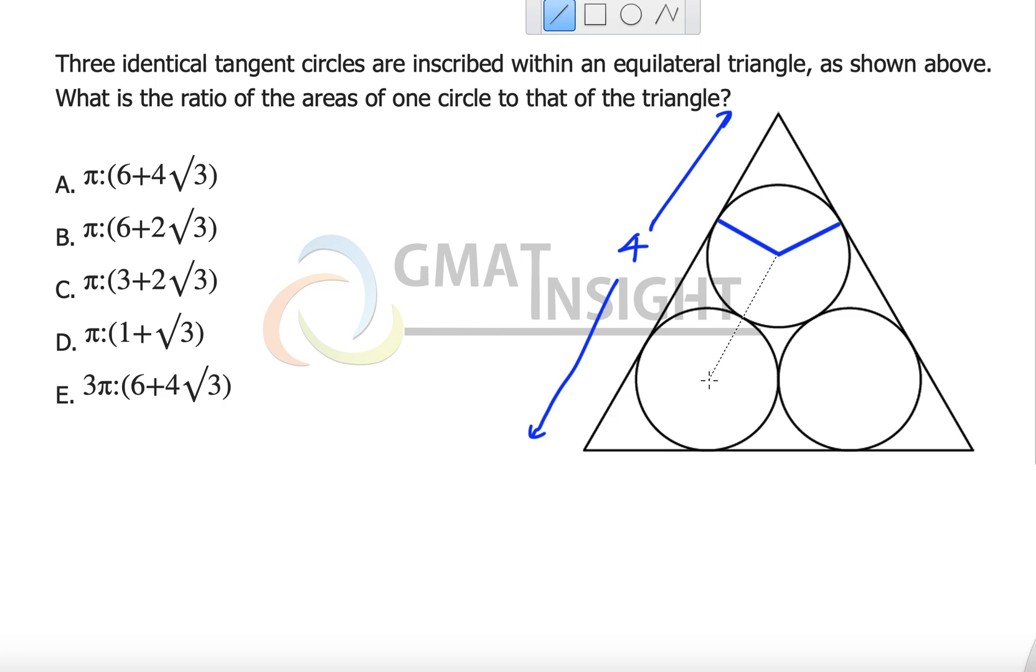We can also join their centers with each other and this also forms an equilateral triangle because here each side of this triangle has the length equal to twice the radius. This is radius, this is radius, this is radius, this also is radius, radius and radius.